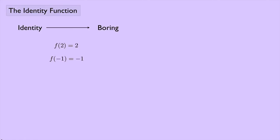Like f of 2, that gives you back 2. f of negative 1, that gives you back negative 1. f of a plus b gives you back a plus b. So in general, I could say f of x, that gives you back x. Pretty boring. This is the identity function.